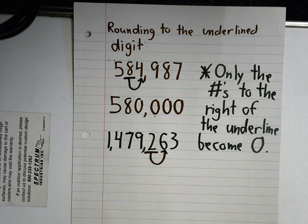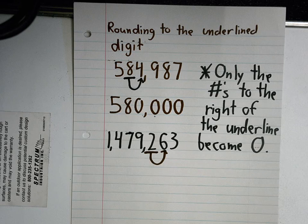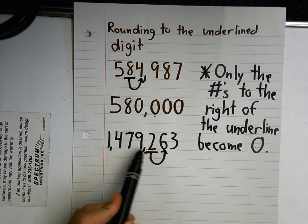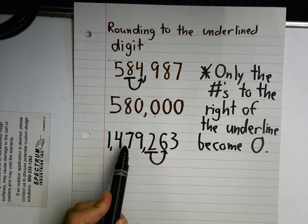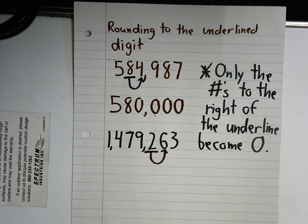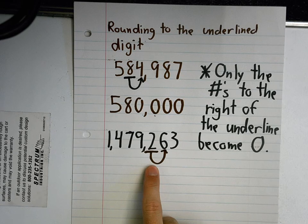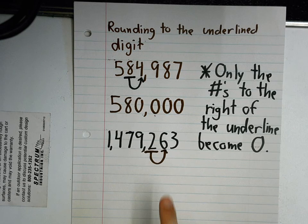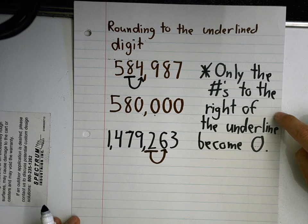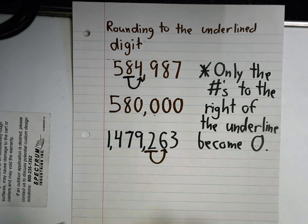Am I going to move that hundred up one, or keep it the same? Up one. And what do I do with all these numbers to the left — the one, four, seven, nine? Keep them the same. We are only going to change the number that's underlined and the numbers after the underline — we're going to make those zero. Remember, only the numbers to the right of the underline become zero.